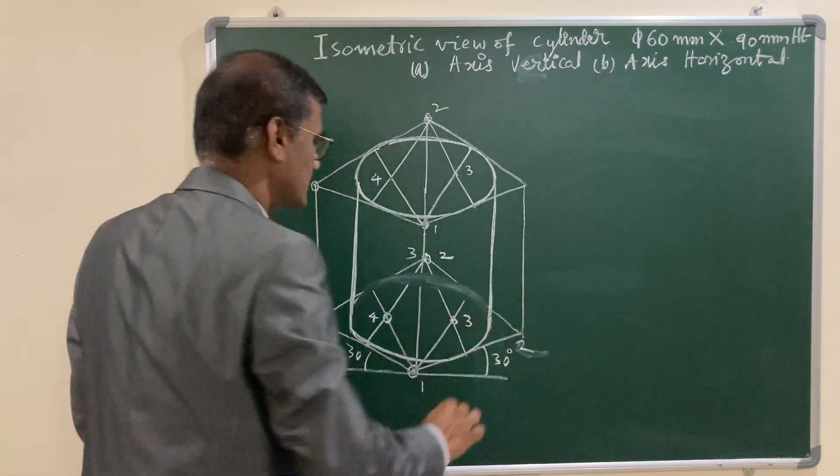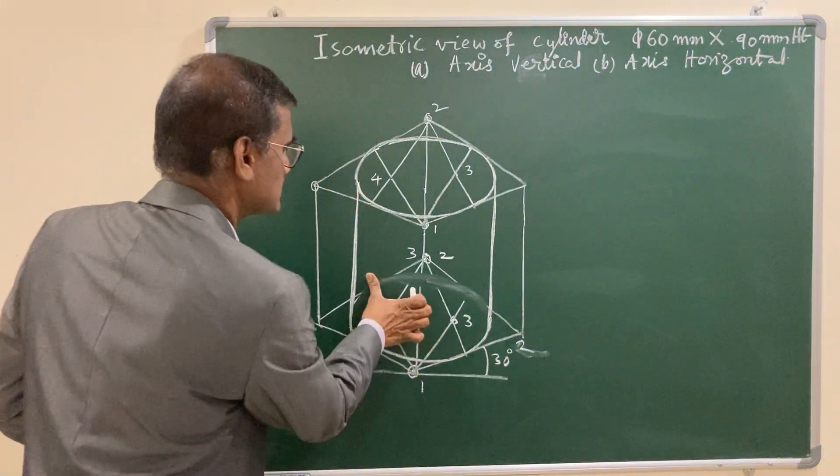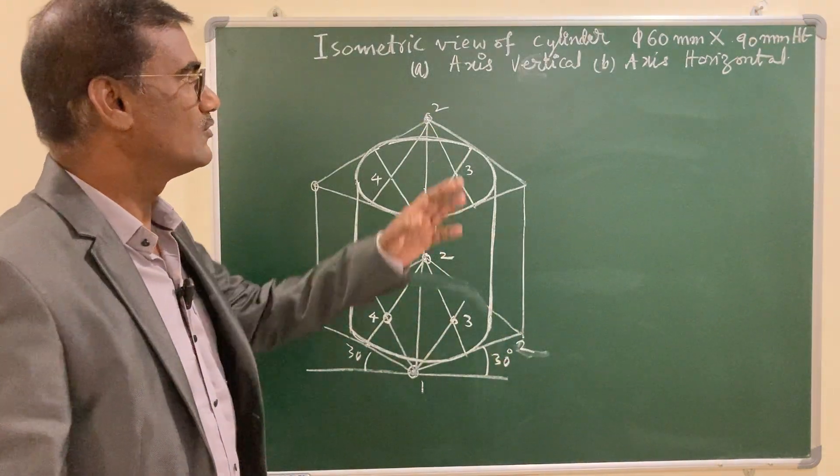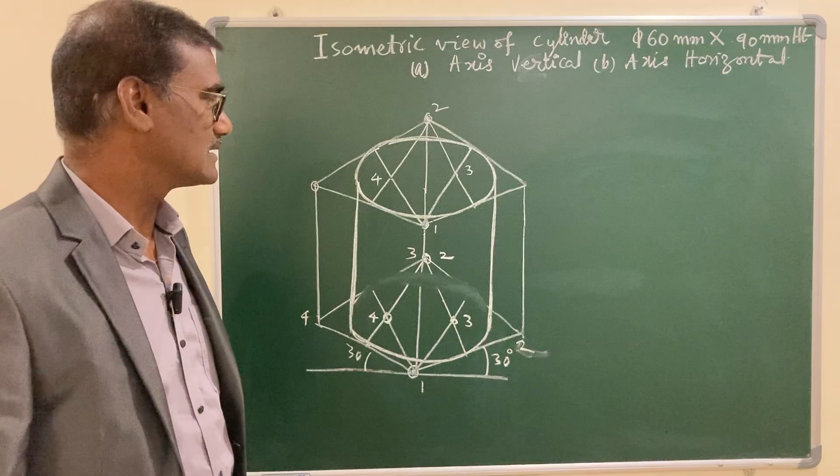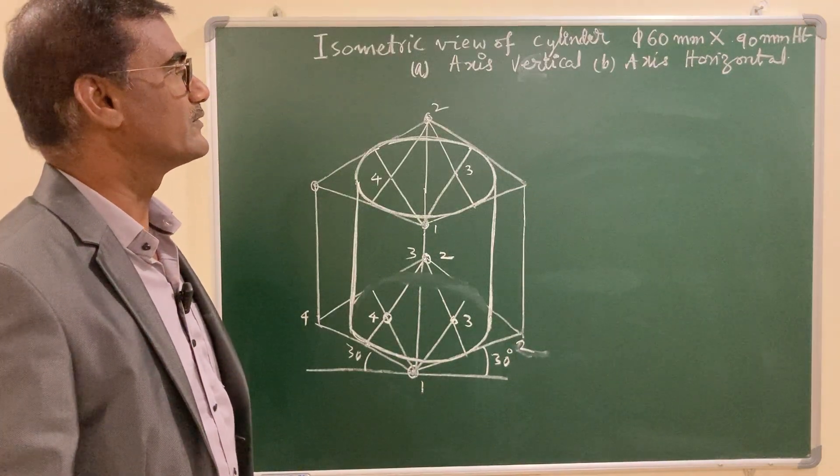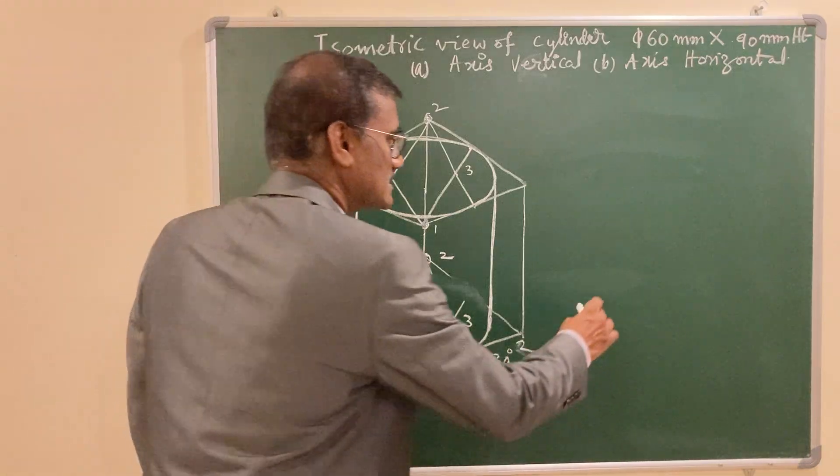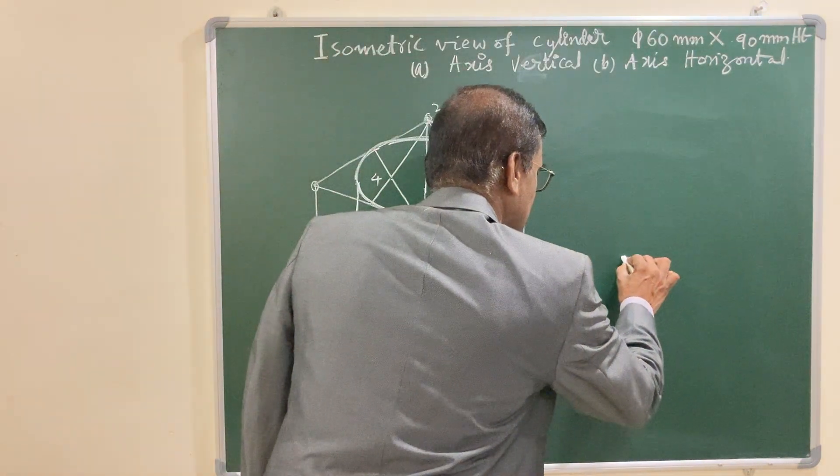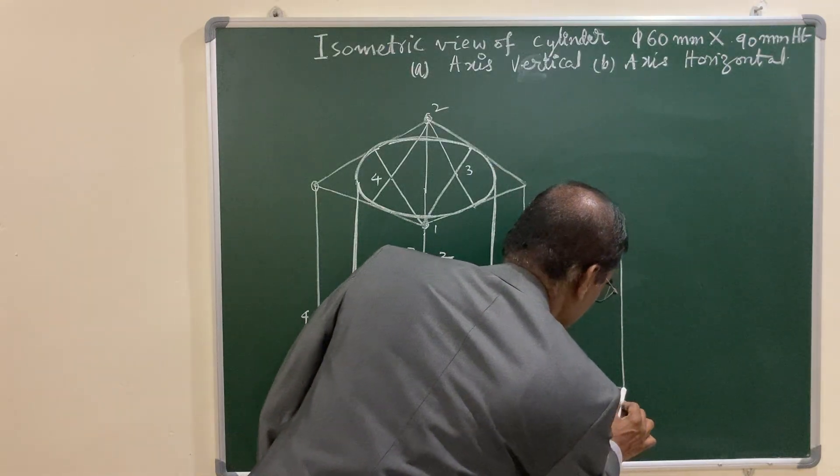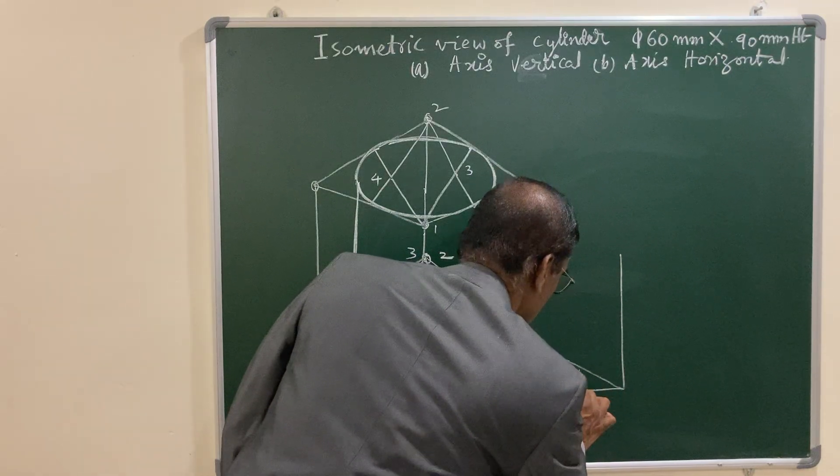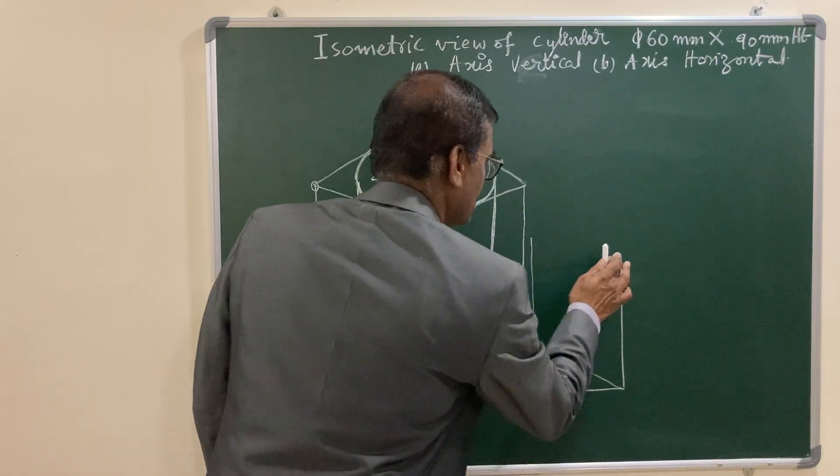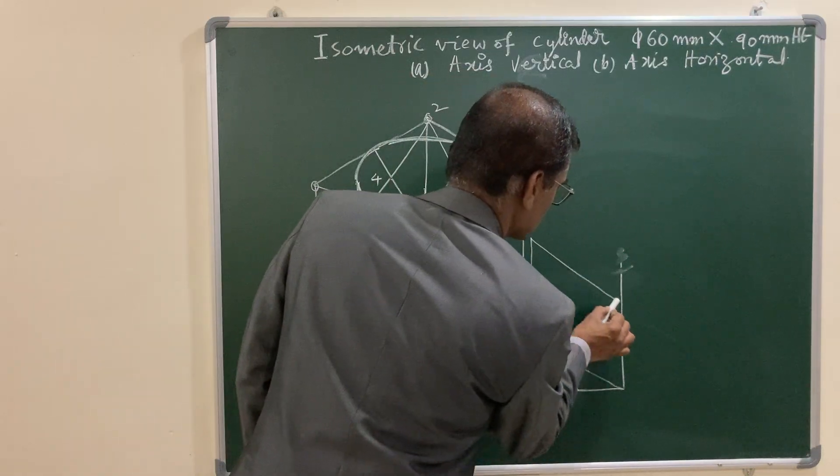This is required view keeping the axis vertical. Similarly you can go for axis horizontal. In that case you have to consider the front view. The front view, vertical lines remain vertical and horizontal will be inclined at an angle 30 degrees with the horizontal.